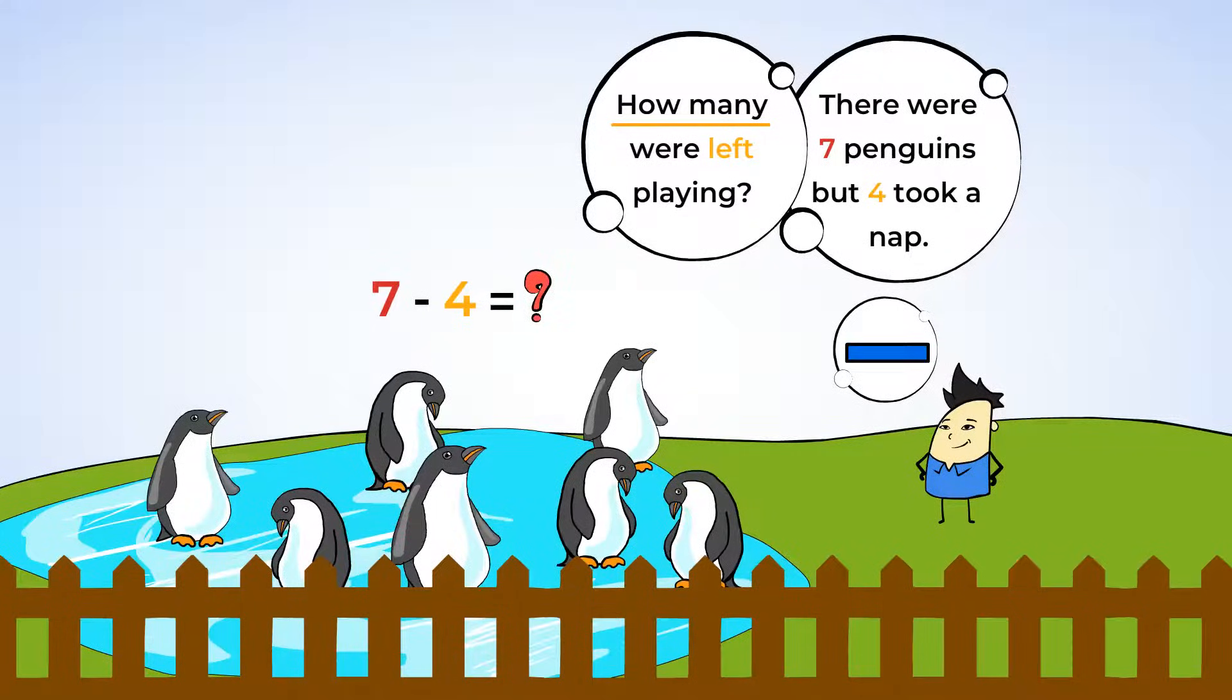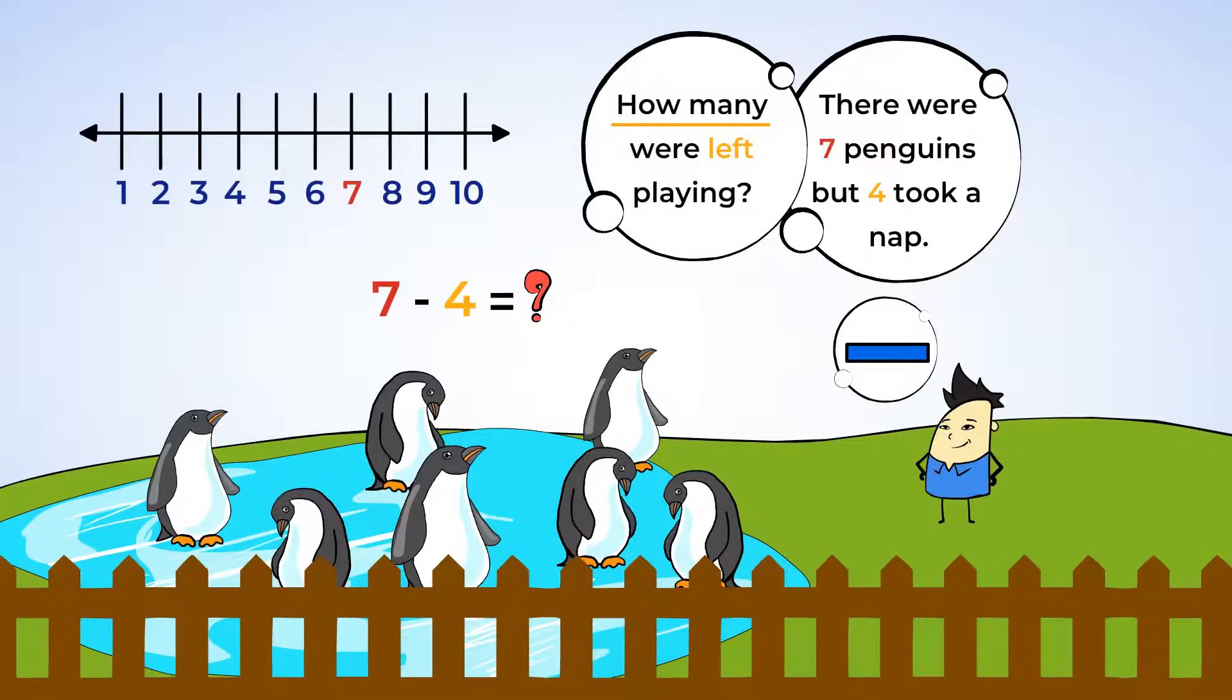Let's use a number line for this one. Here is a number line from one all the way up to ten. There were seven penguins to start. So, let's find the number seven. Here it is. Now, four penguins left. So, let's count back four numbers.